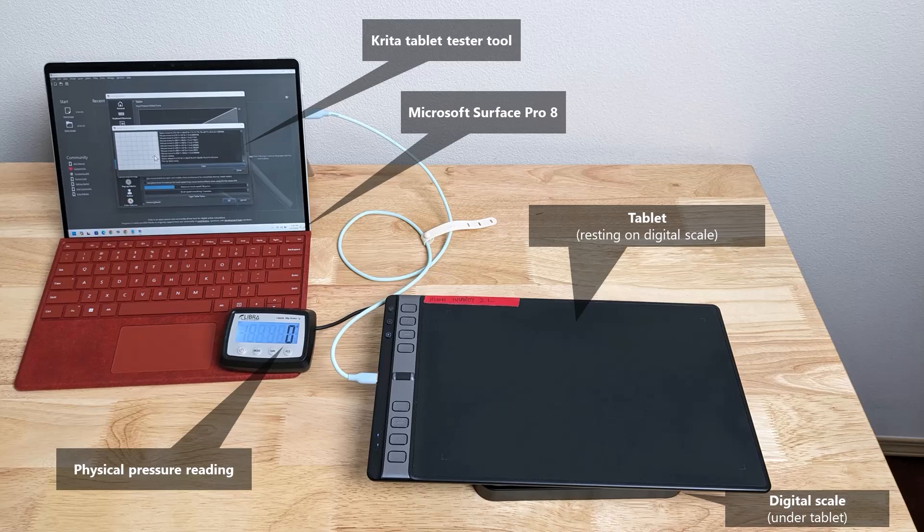You can maybe barely see the scale sticking out from under the tablet. I have moved the digital readout of the scale close to the laptop to make it easier to do the measuring. On the laptop, I'm running Krita. In Krita, there's a tool called the Tablet Tester Tool. And I've turned that tool on. This tool reports information about the pen as I press down on the tablet.